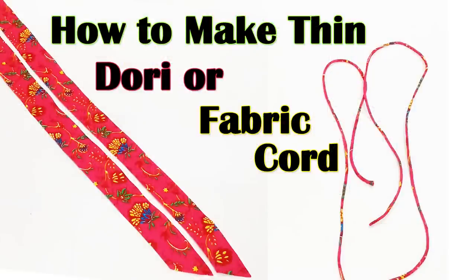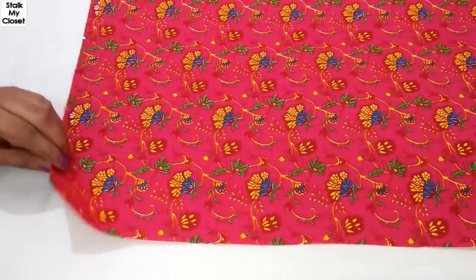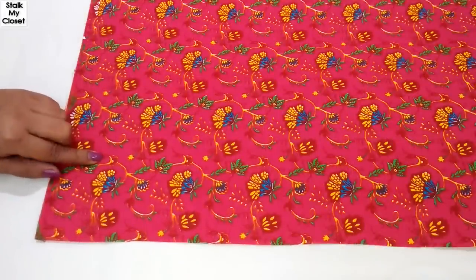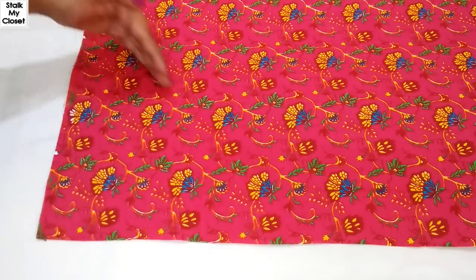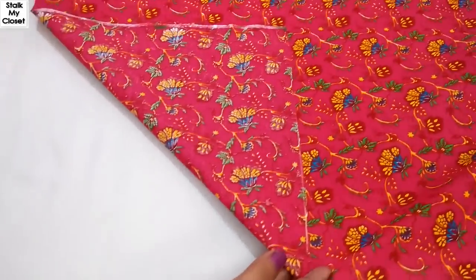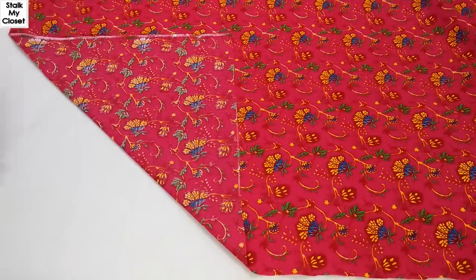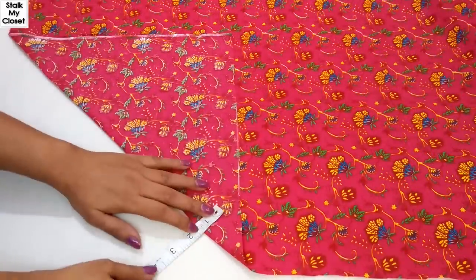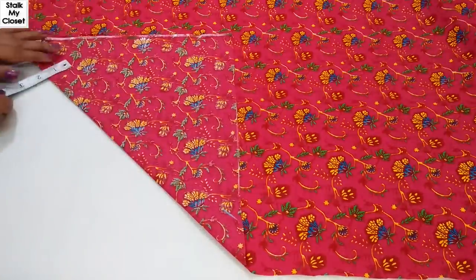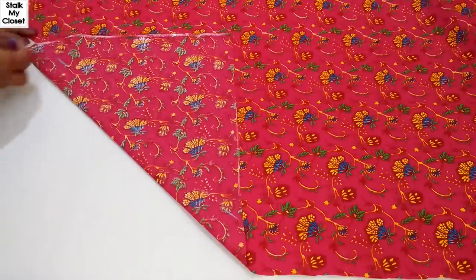I'm using this cotton fabric to make dori. We need a bias strip of fabric, and for that we cut the fabric at 45 degrees. Just fold the fabric like this and mark a point at 1.25 inches. This is on the fold. You can also mark half of 1.25 inches to cut only one dori or cord.